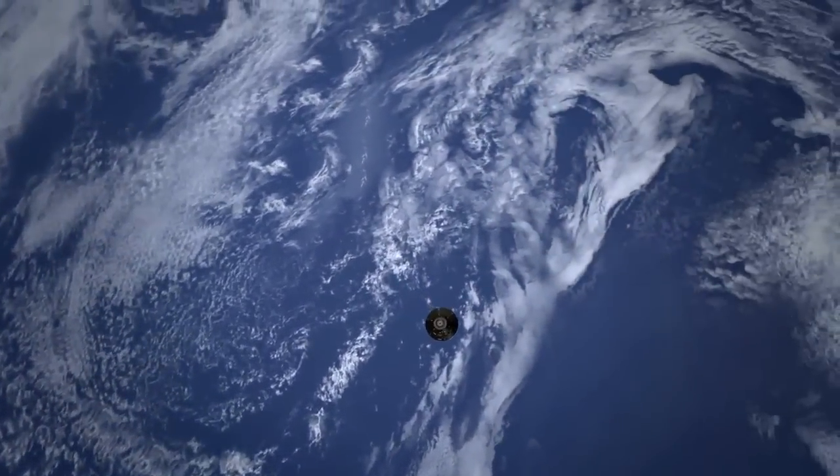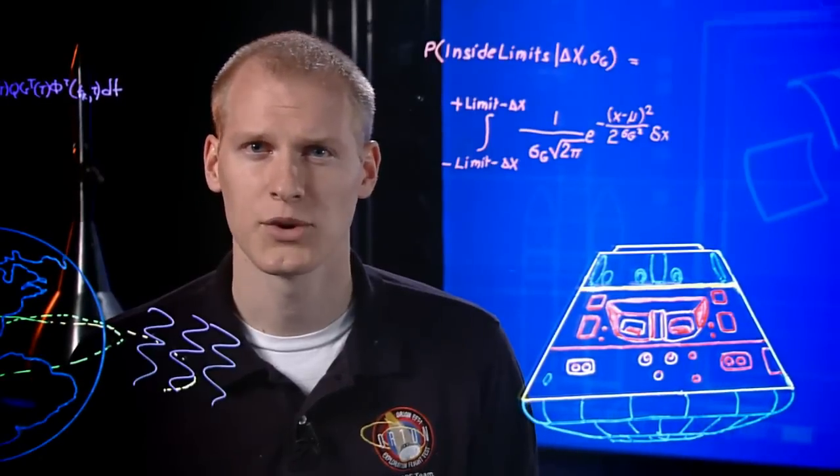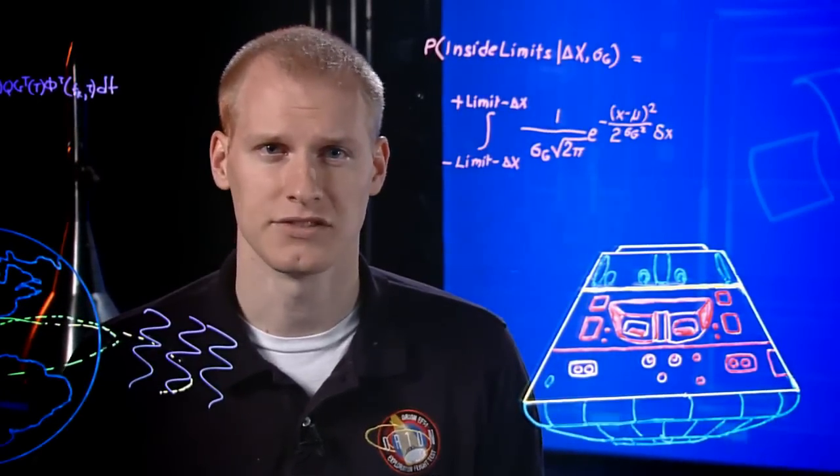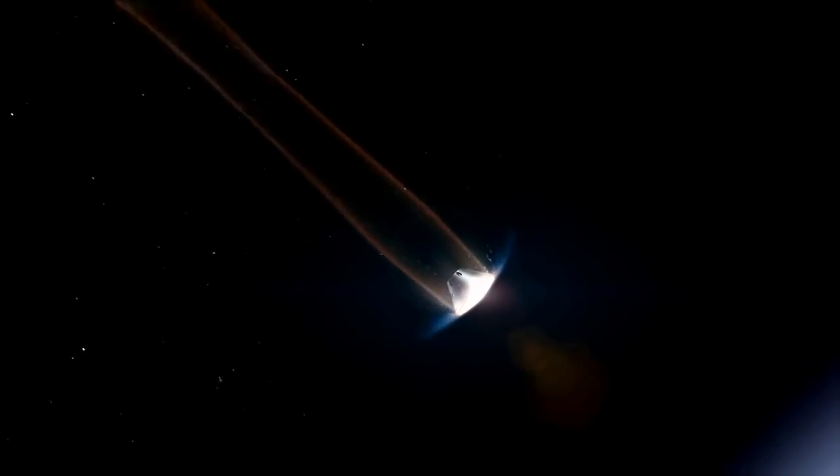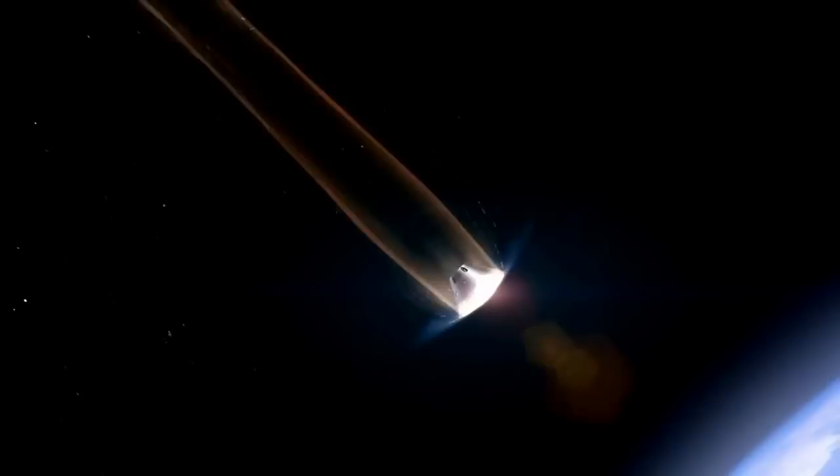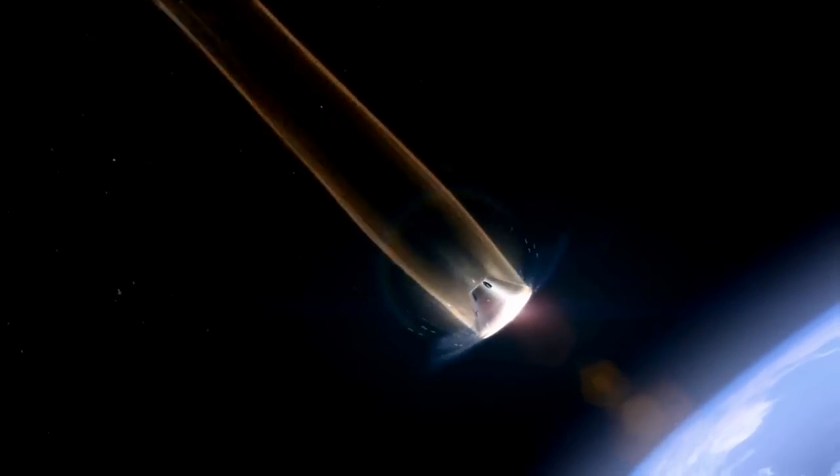75 miles above Earth, the spacecraft enters the atmosphere. Things happen quickly. We're now traveling more than 20,000 miles per hour. Air particles pushed out of the way heat up. An envelope of hot plasma surrounds the vehicle as it plummets towards Earth.